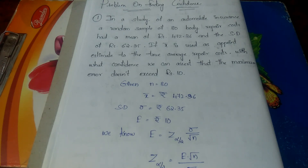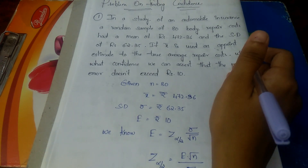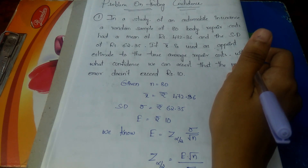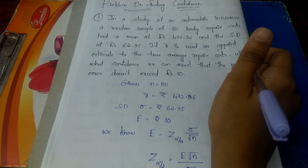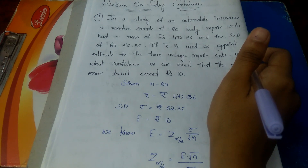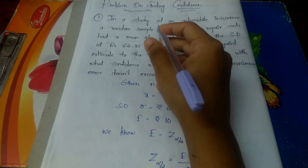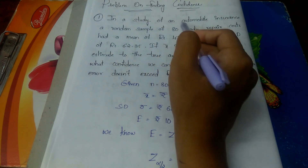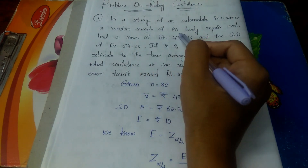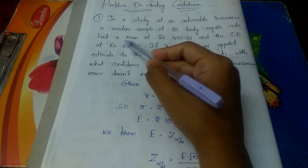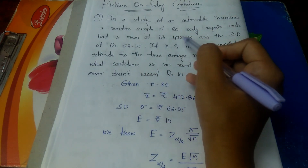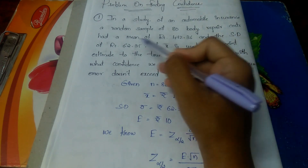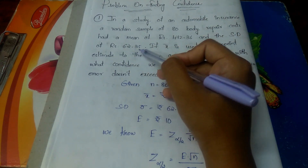Let's look into one of the important problems on finding the confidence. Here we will first find out the Z alpha by 2 value, and from that we will find out the confidence percentage. This is important for 5 or 10 mark questions. The first problem: in a study of automobile insurance, a random sample of 80 body repair costs had a mean of rupees 472.36 and a standard deviation of rupees 62.35.